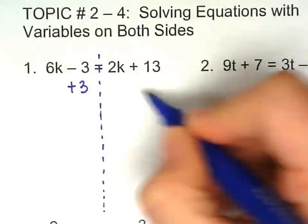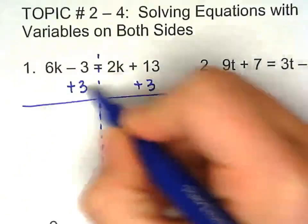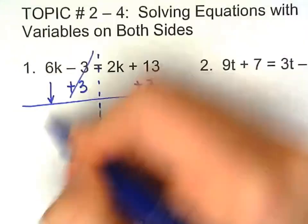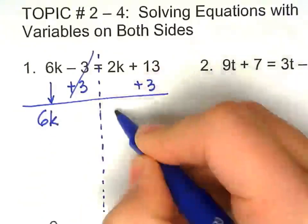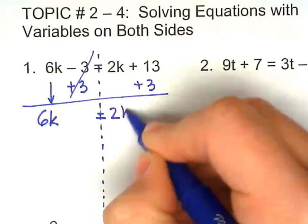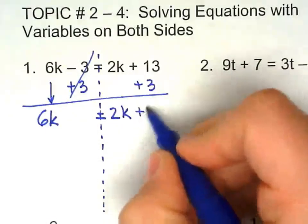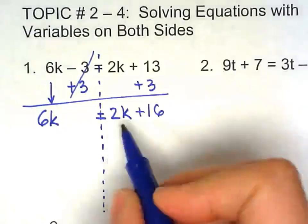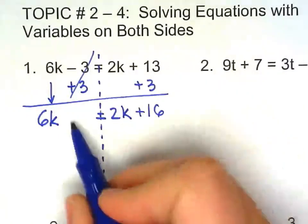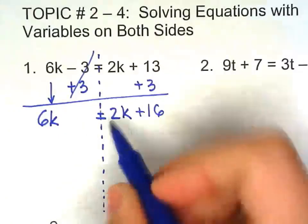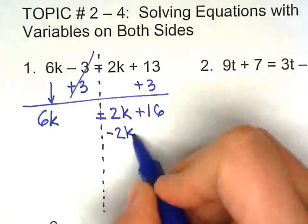So I'm going to start out by adding 3 to both sides. Bring the variables down because we didn't do anything with them. 13 plus 3, right there. Now the variable should be on the left so we need to get rid of this one. So minus 2k.